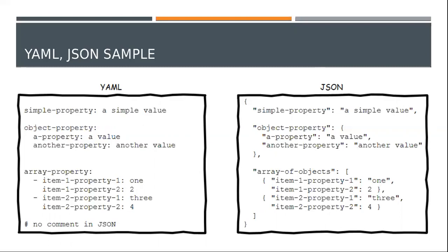Especially in YAML you have the comment section, whereas in JSON we don't have comments. This is one of the advantages of YAML as well.